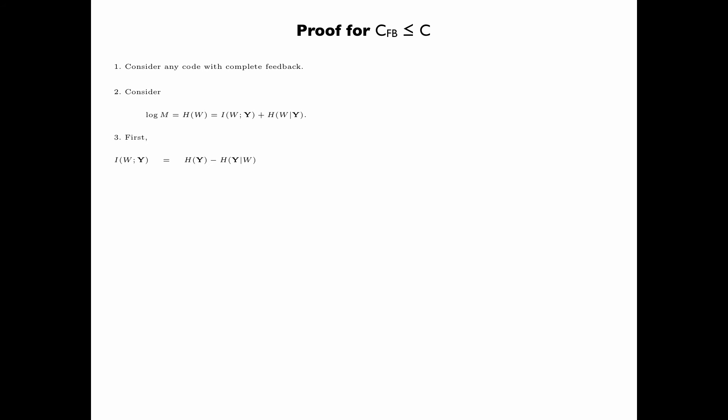For the first term, I(W;Y) can be written as H(Y) minus H(Y|W). And H(Y|W) can be written as summation i equals 1 up to n, H(Y_i|Y^(i-1),W), where this is an application of the chain rule.